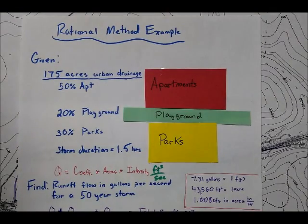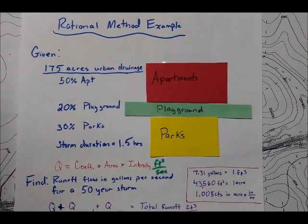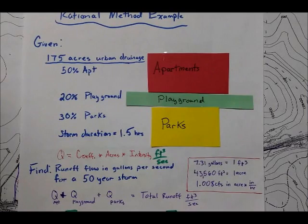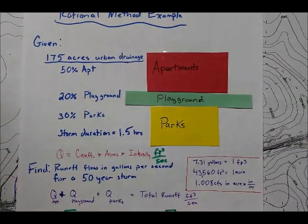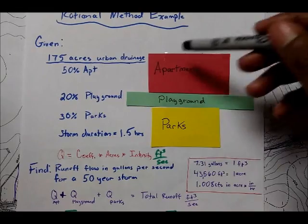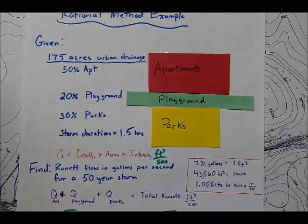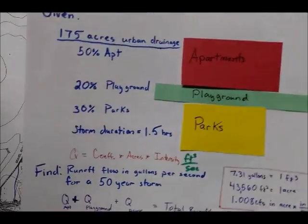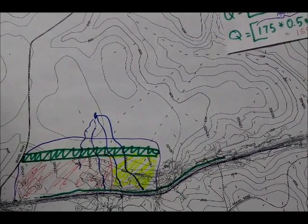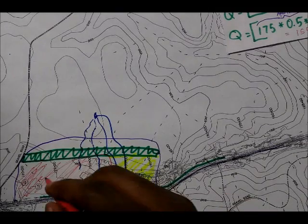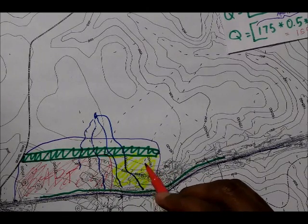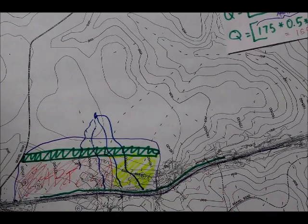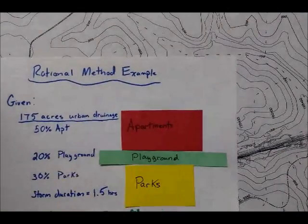Hopefully, now you can see the process in using the rational method to determine what the runoff should be, the rainfall runoff estimates would be for any given location with the apartments, with playgrounds, and with parks within the area that we are surveying and analyzing. If you can remember back, we had an apartment here. I guess that's kind of hard to see. Apartments here. We also had parks here. And this little area represented our playground in this example.